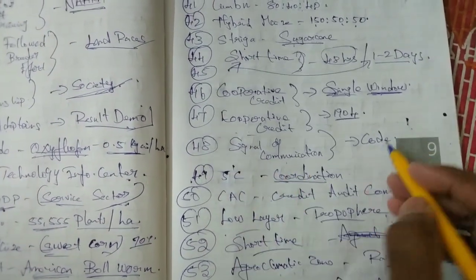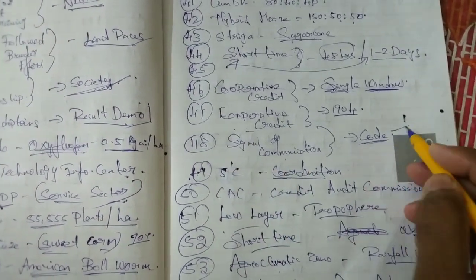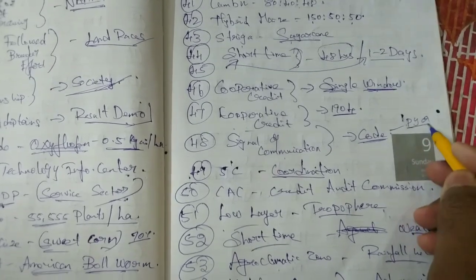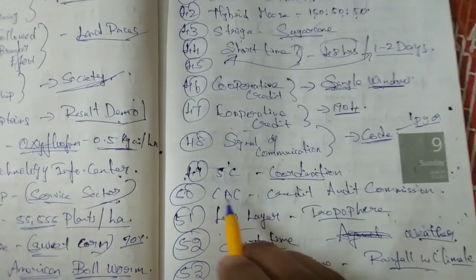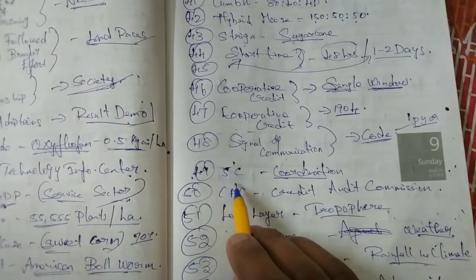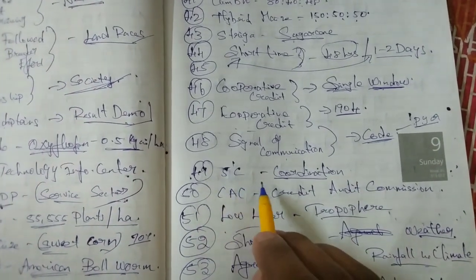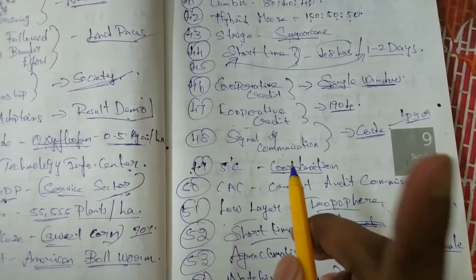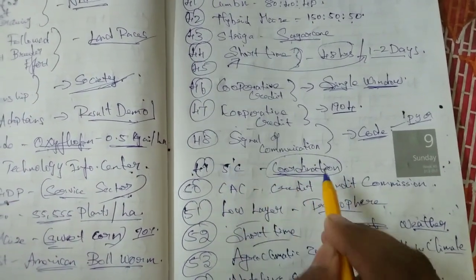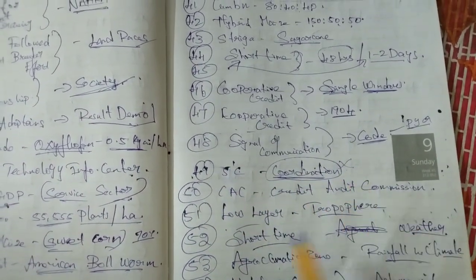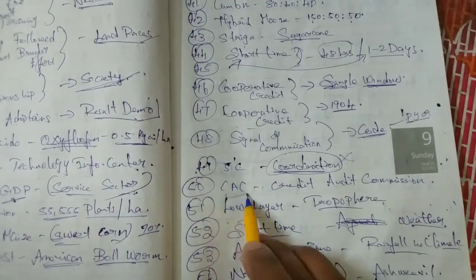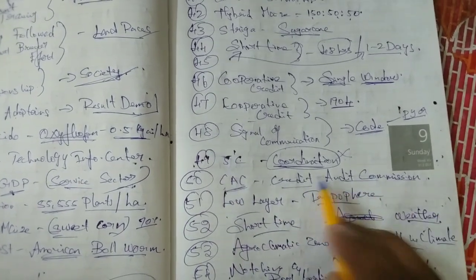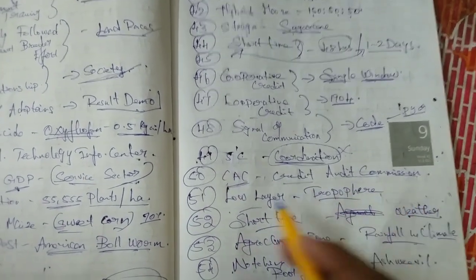That's the signal of communication. This is the previous question — repeat the question. That's one of the previous questions. That's 5C. That's not the C. That's the coordination of C. That's the CAC — Credit Audit Commission.